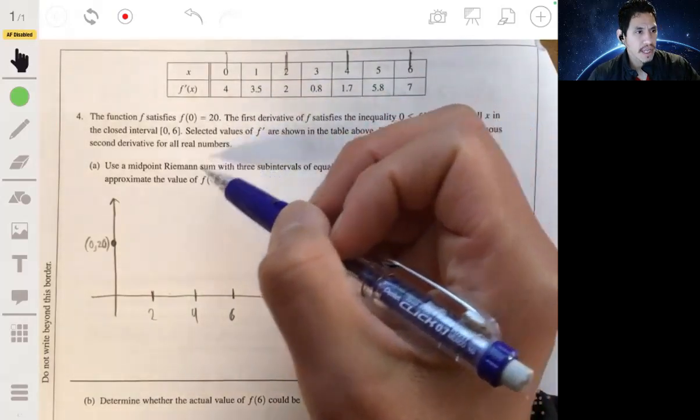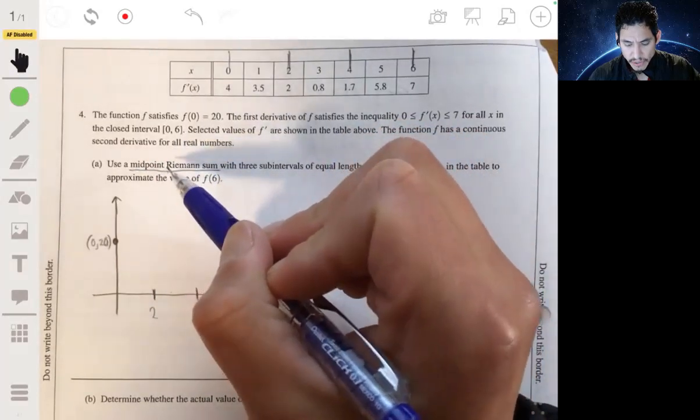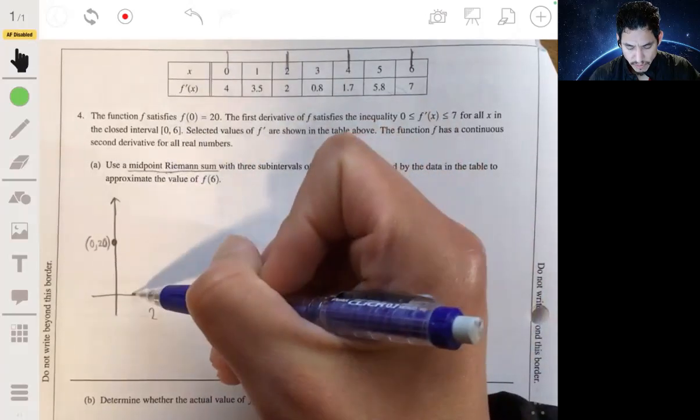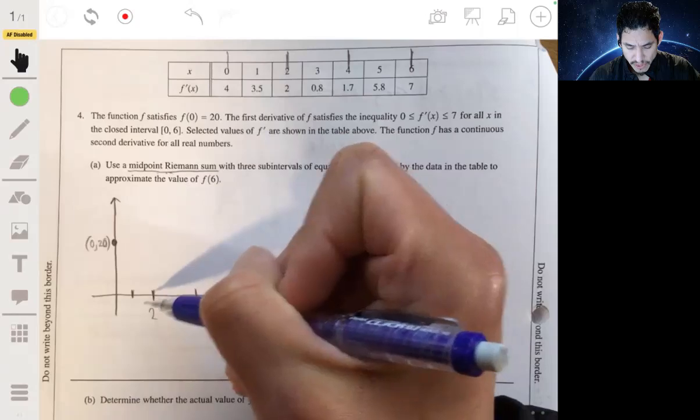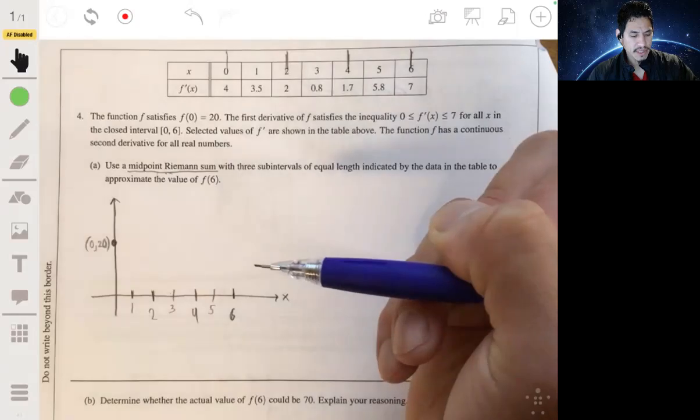In this case, it tells us to use a midpoint Riemann sum. So we want to find the value of the rectangle where we use the middle point between each of these, so 1, 3, and 5, to estimate the height.